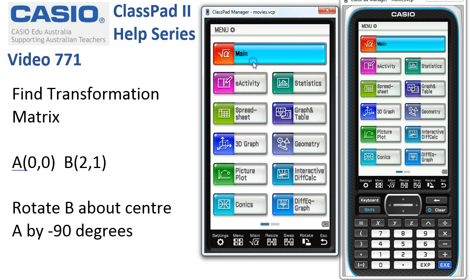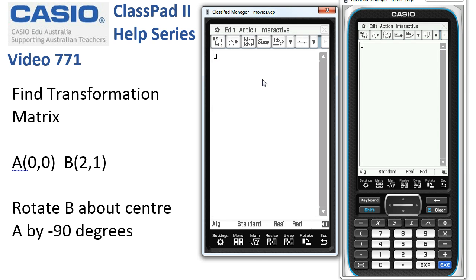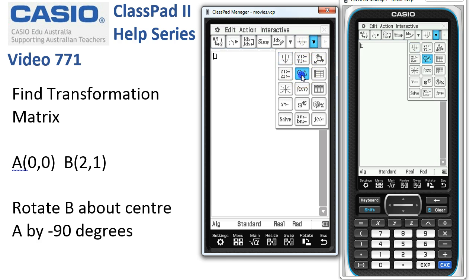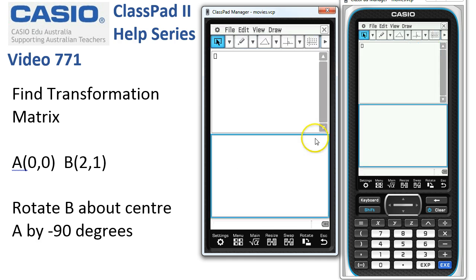We'll go into main to start this and first thing is to go split screen with geometry. So here we are, the geometry icon. Downstairs geometry, upstairs main.